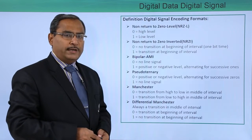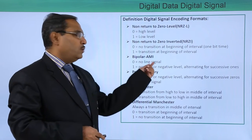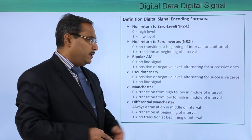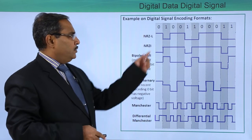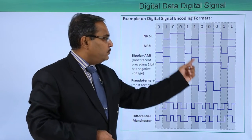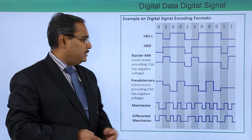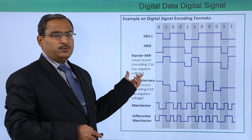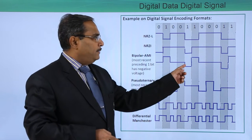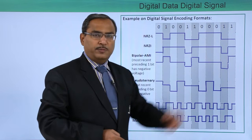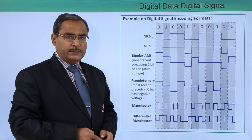Next is Bipolar AMI. In Bipolar AMI, 0 means no line signal and 1 means positive or negative level, alternating for successive ones. For 0, we put no line signal. For 1, considering the previous 1 bit had negative level, this 1 will have positive, then negative, then positive, then negative, then positive. In this way the Bipolar AMI digital signal has been drawn.